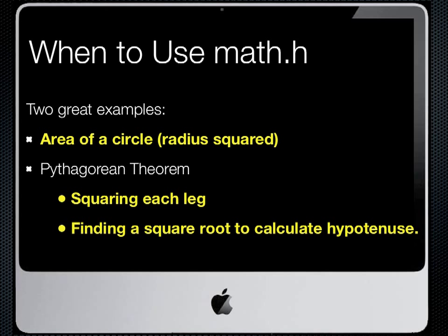We'll often use the square root function. In this case, x, which would be a double, is equal to the square root of y, which would also be a double. And finally, the fourth example shows us how we might raise y to the fourth power and assign that value to the double variable x.